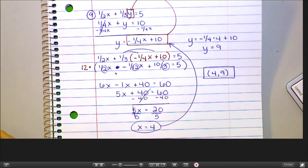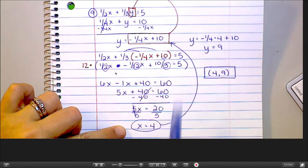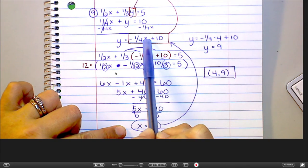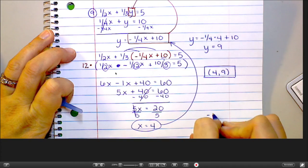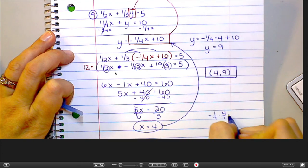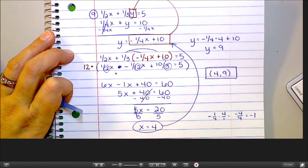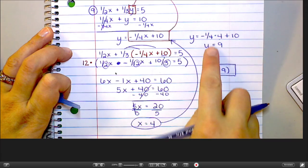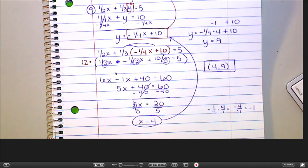Can you do the last step? Just this part, the plugging in? So we found that x was equal to 4. I'm plugging that in for x up here. So I did negative 1 fourth times 4. Negative 1 fourth times 4 is really negative 1 over 4 times 4 over 1. So negative 1 times 4 is negative 4. 4 times 1 is 4. And so that equals negative 1. So this is like negative 1 plus 10, which is where I got 9. Does that make sense?